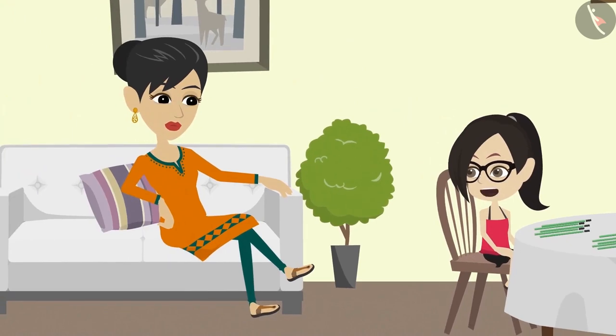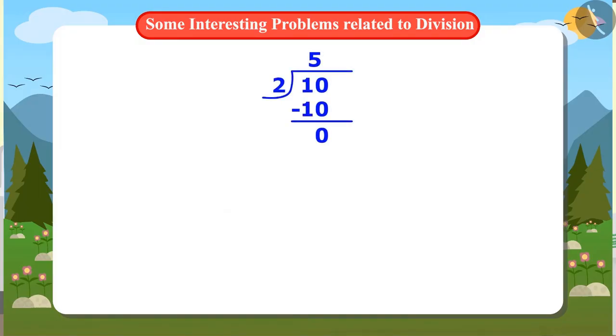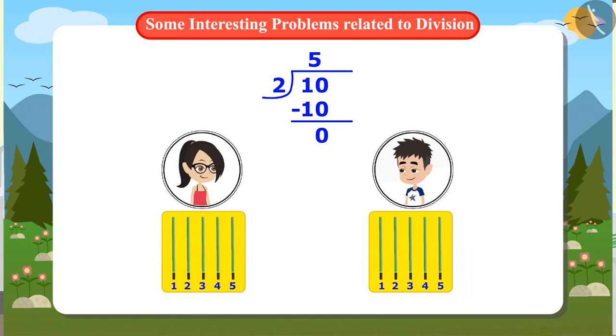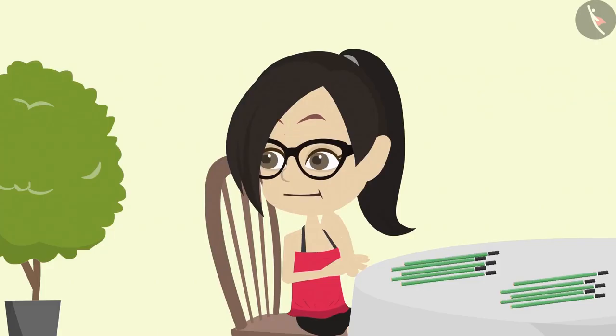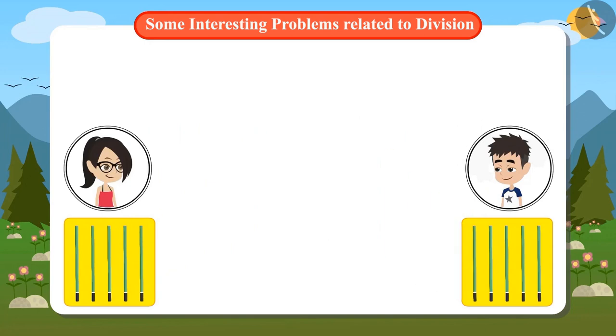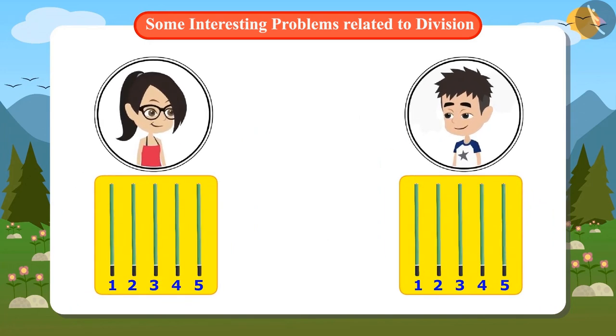Mummy, the answer was 5 when I divided 10 by 2. Vandana, when 10 is divided by 2, if the answer is 5, it means that dividing 10 pencils into two parts will bring 5 pencils in each part. Well, now I understand. Even when I equally distributed the pencils one by one, there were 5 pencils for my brother and me.